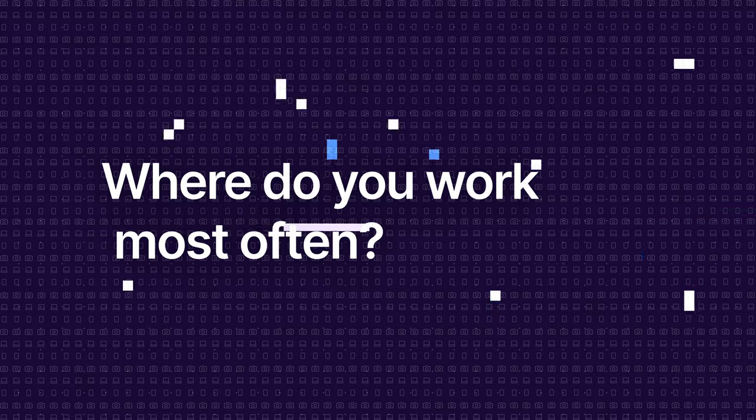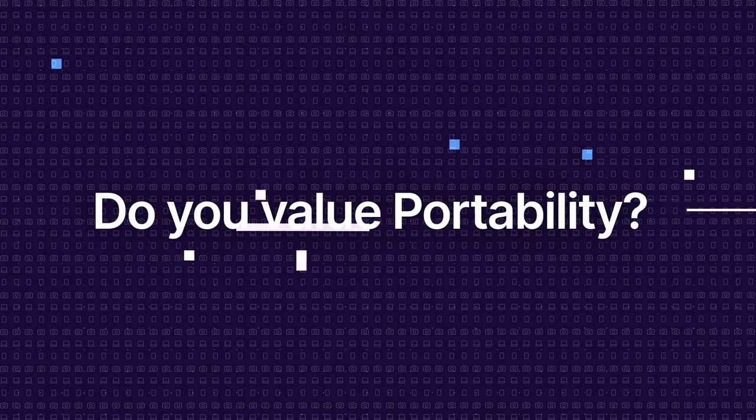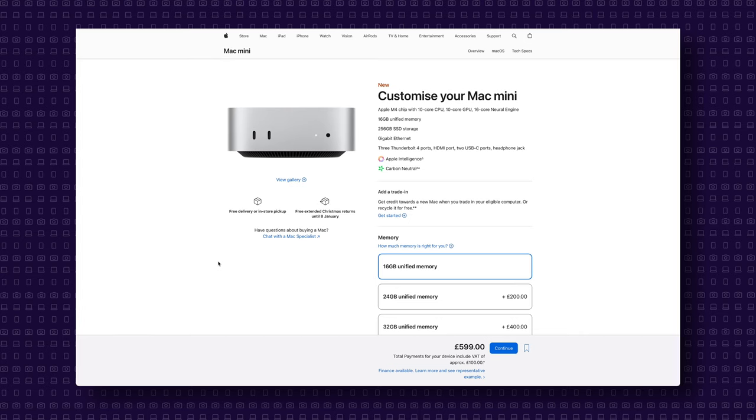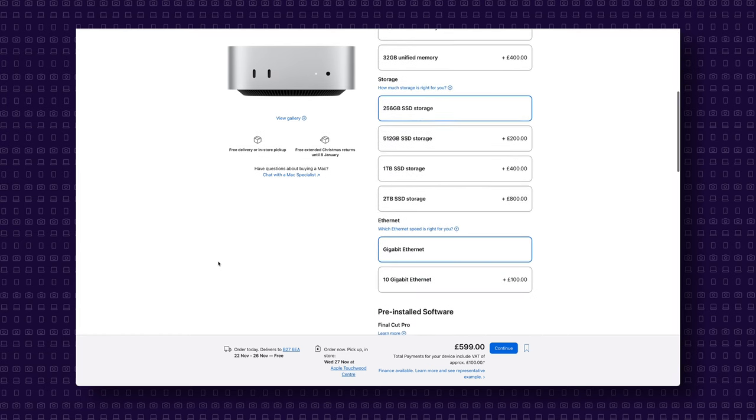Still not sure? Here are some questions to ask yourself: Where do you work most often? If you're always on the go, choose a MacBook. If you're home or office-based, consider a desktop. What kind of work do you do? Creative professionals or developers might benefit from a desktop. If you value portability, go for the MacBook — or both, if your budget allows. Remember, the best value-for-money Mac right now is the M4 Mac Mini — a great upgrade or introduction to the Mac.